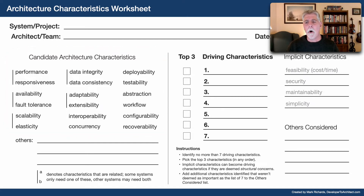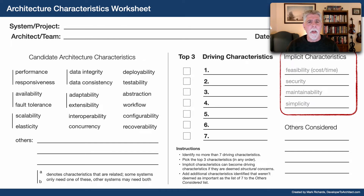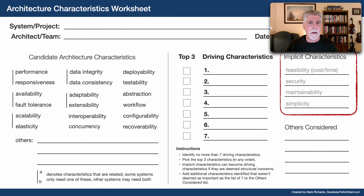Moving to the far right-hand side, you see the implicit characteristics shown in gray. These are architecture characteristics that we would obviously put into any architecture — maintainability, security, time and budget feasibility, for example. These are all implied. They stay over there unless they become driving characteristics, which I'll show you in the example.